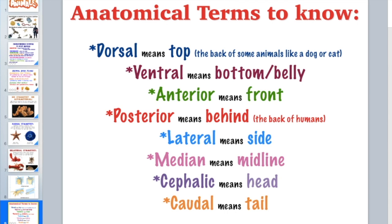Now we'll focus on anatomical terms. Put these on index cards or Quizlet, but make sure you don't just memorize them — know examples and be able to identify where they're located. Dorsal means top, referring to the top or back — think of the dorsal fin on a shark, which is at the top.